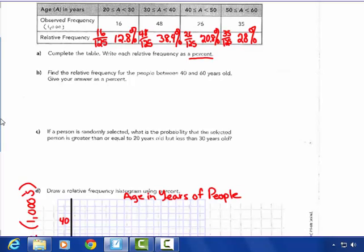Find the relative frequency for the people between 40 and 60 years of age. So I have to add two of my areas together, which is the 20.8 plus the 28 percent. Give your answer as a percent. Between 40 and 60, that's these two percents I'm adding together, which gives me a total of 48.8 percent.